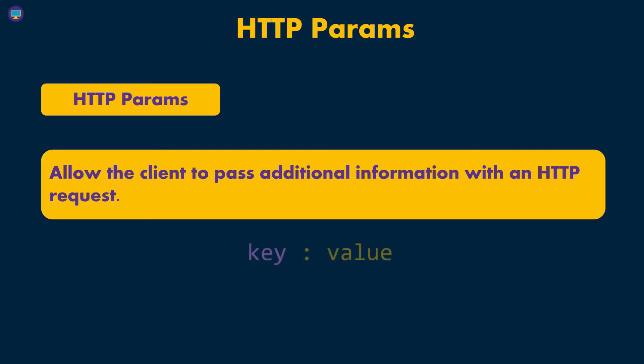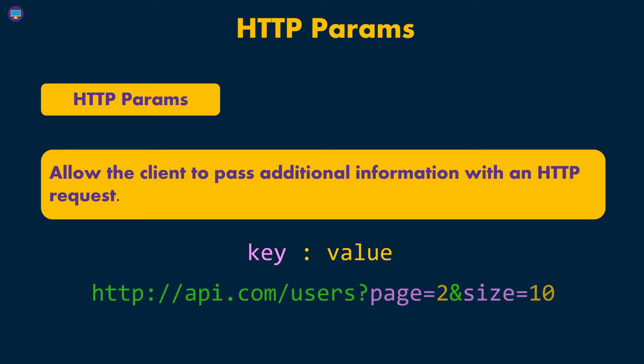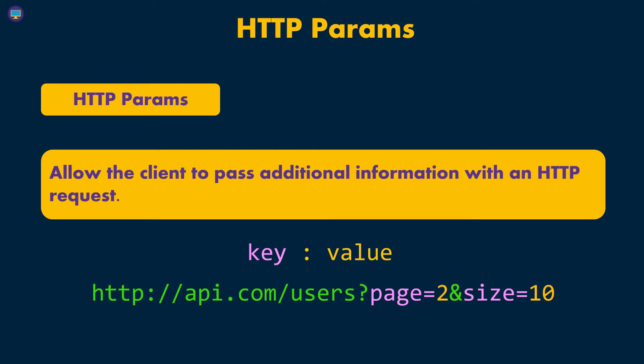They have a very similar format — you're going to have a key and then the value, and it's going to look like this with the URL. I have an API here and I'm trying to fetch some users, but I tell the server that I only want page two and I want that page to have 10 items inside of it. Those are HTTP query parameters, or HTTP parameters, as Angular calls them — also known as request parameters or query parameters.